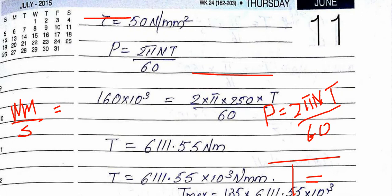When we divide by 60, the minutes cancel out and we get seconds. This gives us T in newton-meters, which is the correct unit for torque.